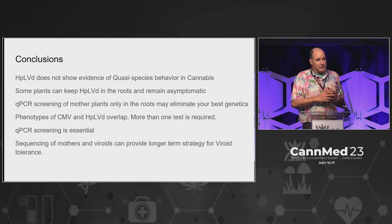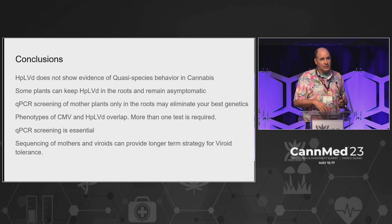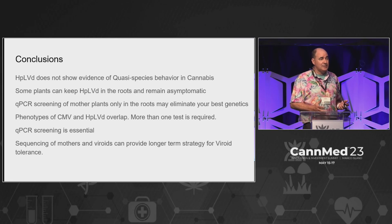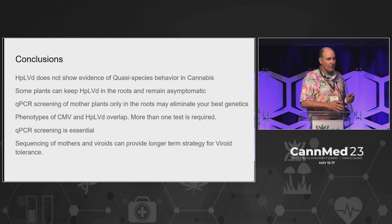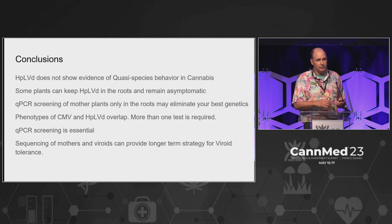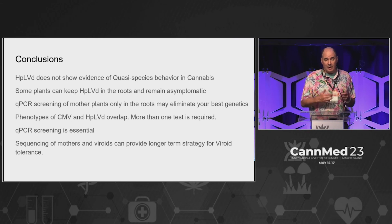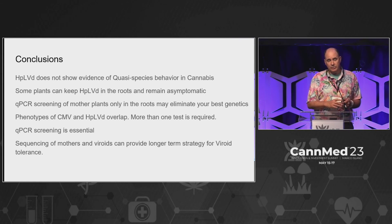In conclusion: we don't see evidence of hop latent viroid being a quasi-species — all the literature suggests otherwise, but we're just not seeing it from the sequencing we've been doing. Please send in samples; we'll sequence more and track this for the industry, because it's going to be important in case it does mutate. Some plants can keep HLV in the roots and remain relatively asymptomatic — if you're going to cut and kill every plant that's positive only in the roots, you might lose the plants that are in fact most tolerant. Consider an isolation room where you can find plants with very low viroid load and start breeding with those, because that might be a better long-term plan than being on a PCR treadmill. There are phenotypic overlaps between CMV and HBLV, we need more screening for CMV, and sequencing mothers and viroids can provide a long-term strategy for how to bridge through this.